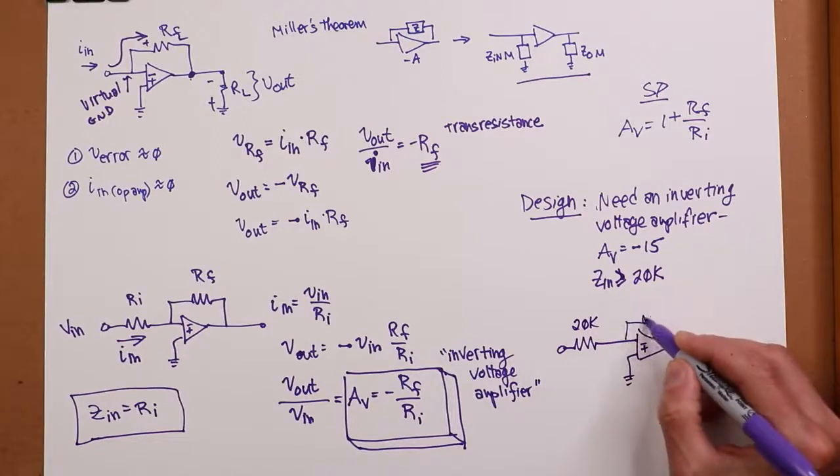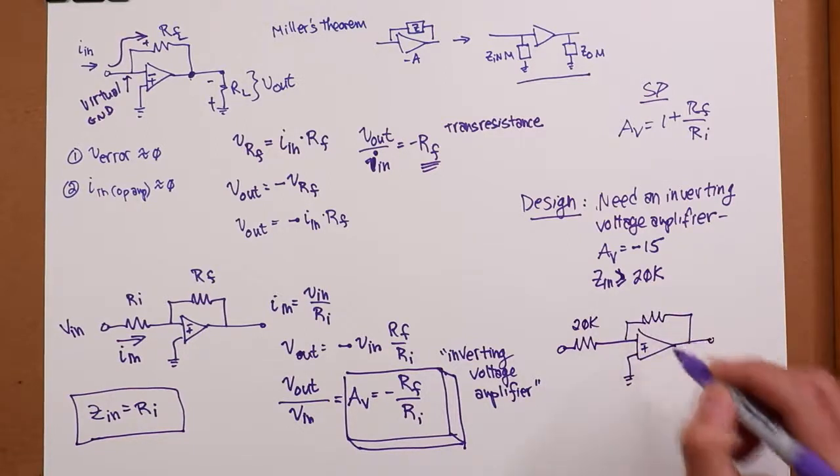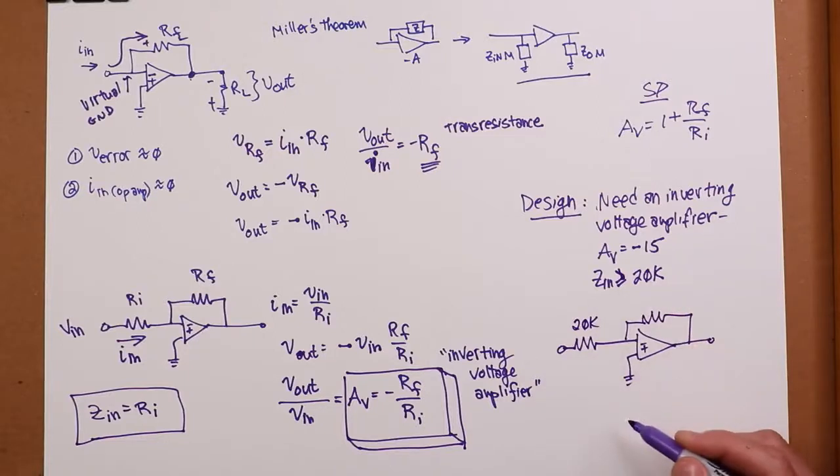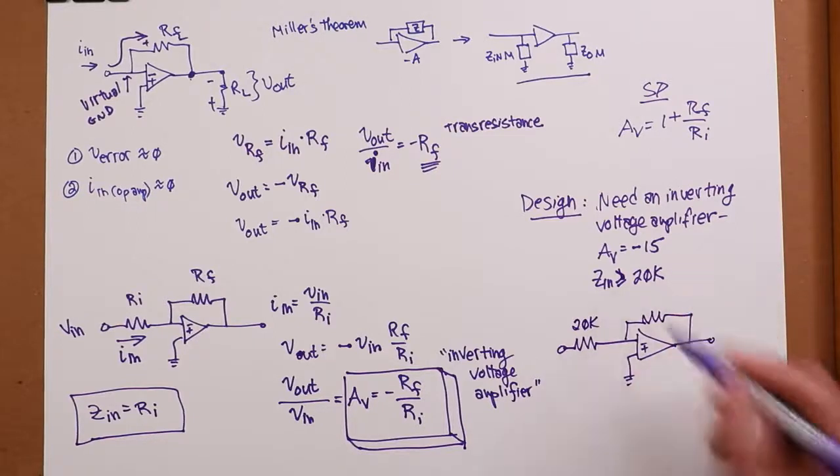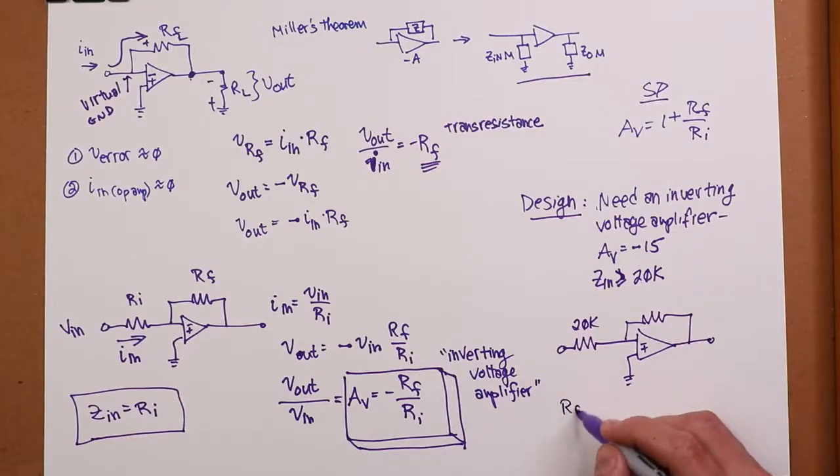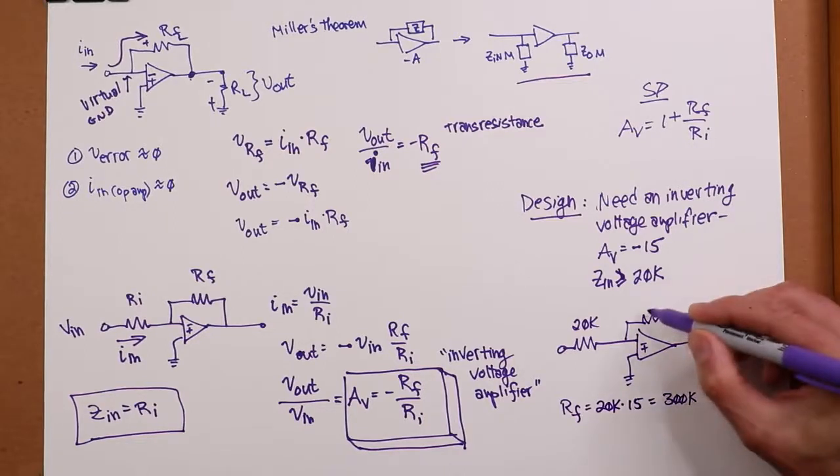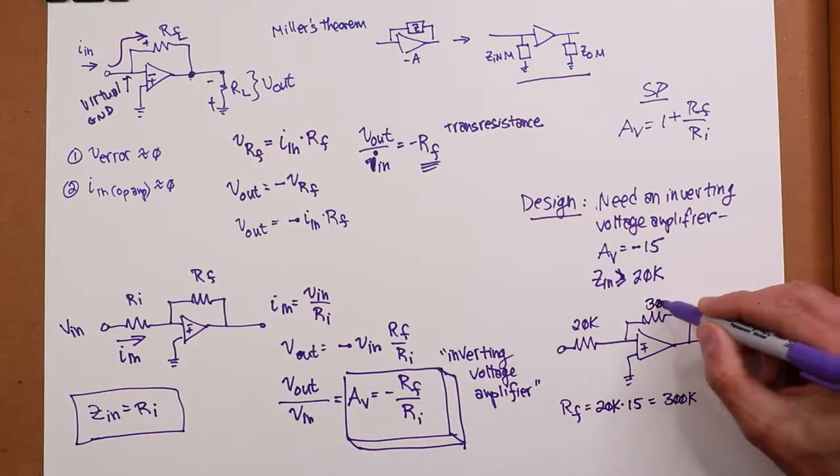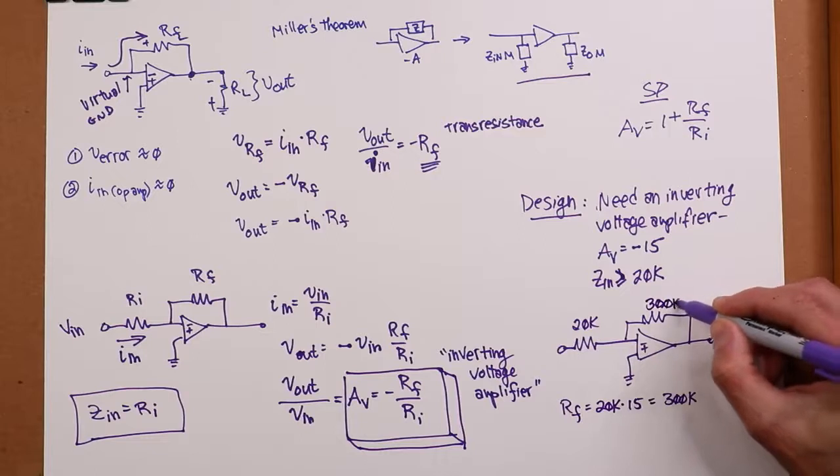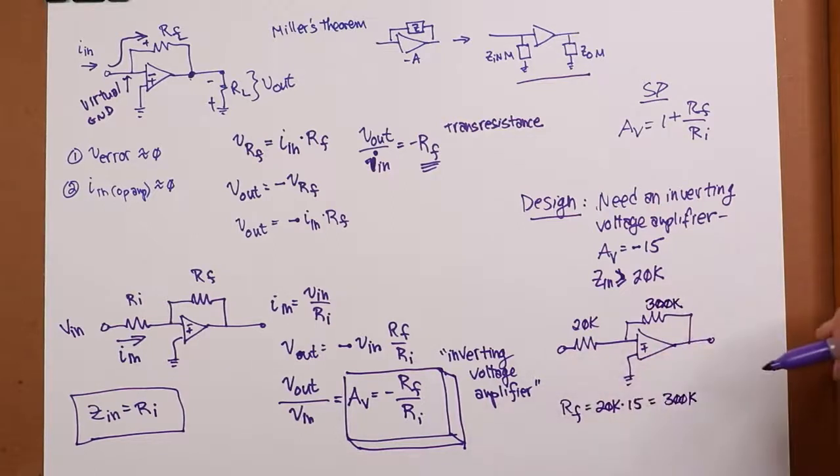And then it's just a matter of figuring out what gives me a gain of 15. So, 20 times the magnitude of 15 will tell me what RF is. All right. So, we need a 300K resistor in there. And there's our inverting voltage amplifier.